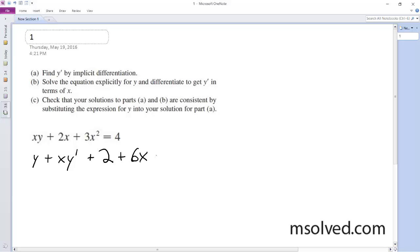So what happens, and then derivative of 4 is just equal to 0. Alright, so what happens here is I'm going to move everything over to the right side of the equation except for xy prime. So I'm going to have xy prime is equal to negative 2 minus 6x minus y.